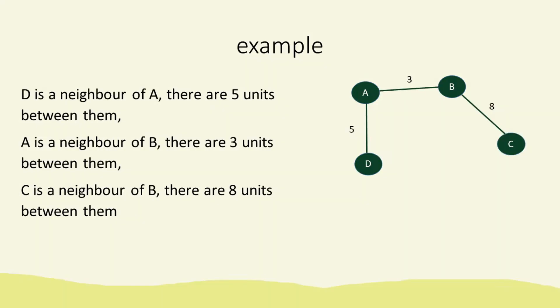In this example, D is a neighbor of A and there's five units between them. It could be a cost or a distance. It's some type of figure. A is a neighbor of B, three units between them. C is a neighbor of B and there are eight units between them.